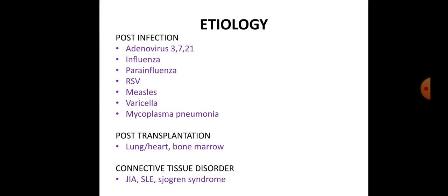Regarding etiology, bronchiolitis obliterans occurs after infection with adenovirus types 3, 7, and 21, influenza, parainfluenza, RSV, measles, varicella, and Mycoplasma pneumoniae. These infections are common causes, particularly in the pediatric age group as well as in people of Asian descent.